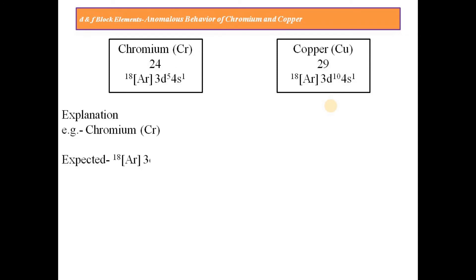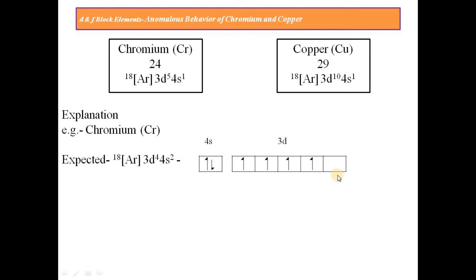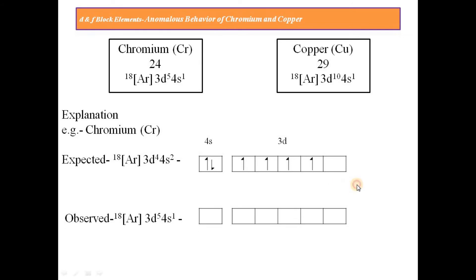In the case of Chromium, the expected electronic configuration is [Ar] 3D4 4S2. The 4S has 2 electrons and 3D has 4 electrons, leaving one 3D sub-orbital empty. In the observed electronic configuration, [Ar] 3D5 4S1, one electron from 4S shifts to 3D. Now 3D is exactly half-filled with 5 electrons — one in each of the five sub-orbitals — giving it maximum stability. That is why there is a difference between the expected and observed electronic configuration of Chromium.